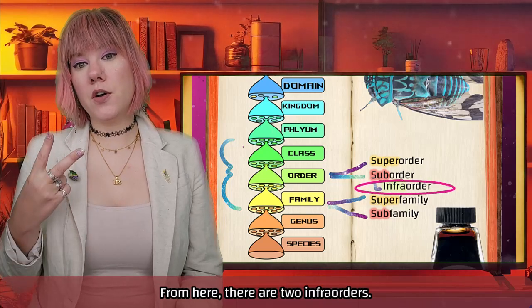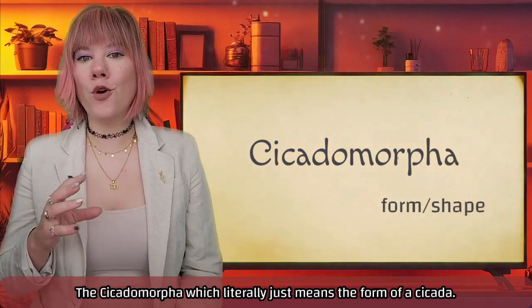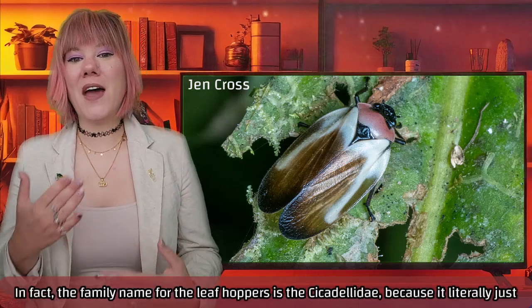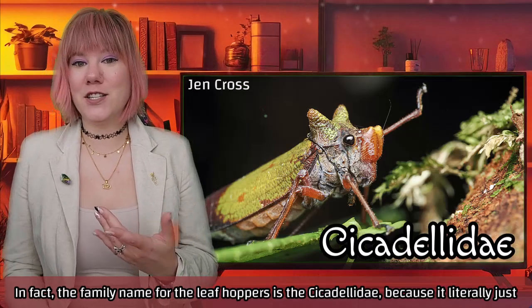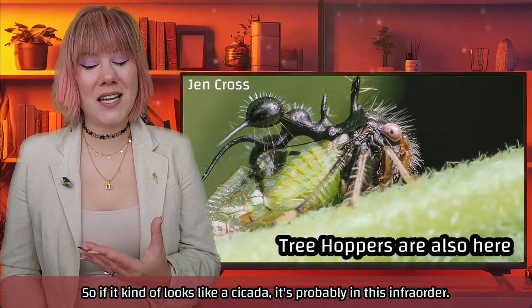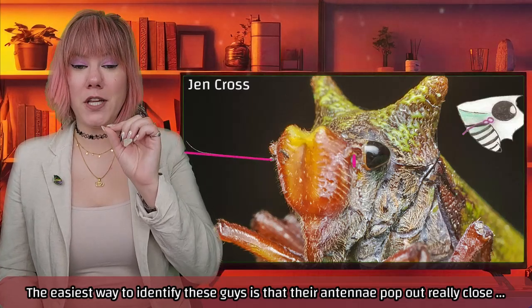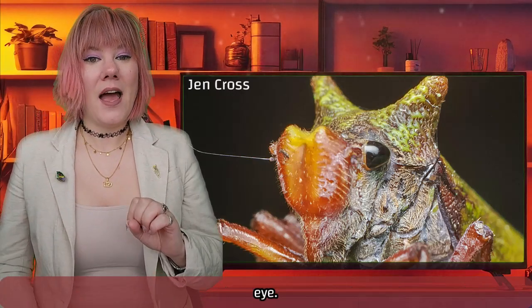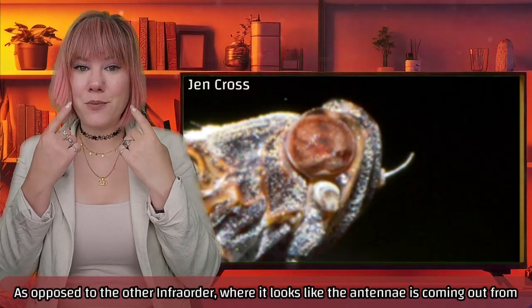Within Auchenorrhyncha there are two infra-orders. The first is Cicadomorpha, which literally just means 'the form of a cicada.' This includes your cicadas, your leafhoppers, and your spittlebugs. In fact, the family name for the leafhoppers is Cicadellidae, because it literally means 'little cicada.' The easiest way to identify these is that their antennae emerge very close to their eyes — the antennae look like they're coming out from right next to the eye.